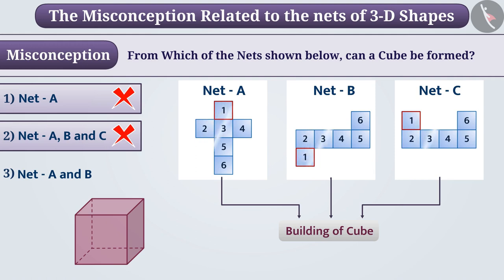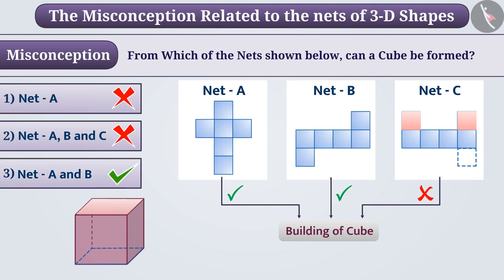Here, there are 6 square faces in each net. But if we imagine, only net A and net B can build cube. If we talk about net C, then these two faces come on top of each other and the space of one face remains empty. Therefore, a cube cannot be formed from net C. That is, option 3 is the correct answer.